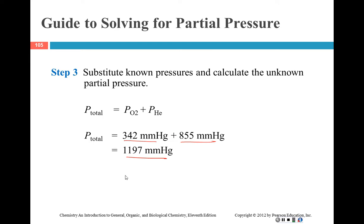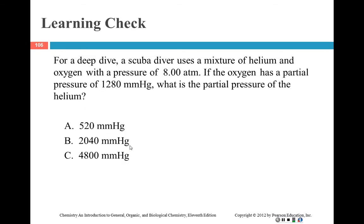So you now have 342 millimeters of mercury of oxygen and 855 millimeters of mercury of helium, and so the total pressure is going to be the sum of those two. Don't you like this one? You just add them together. Once you have them in the same units, you just add them together. If you're given the total pressure and one of them, then you just subtract.